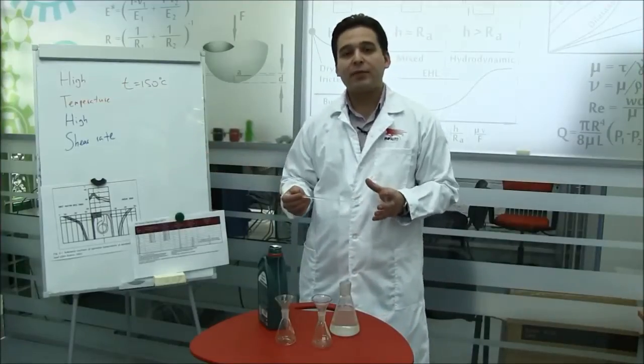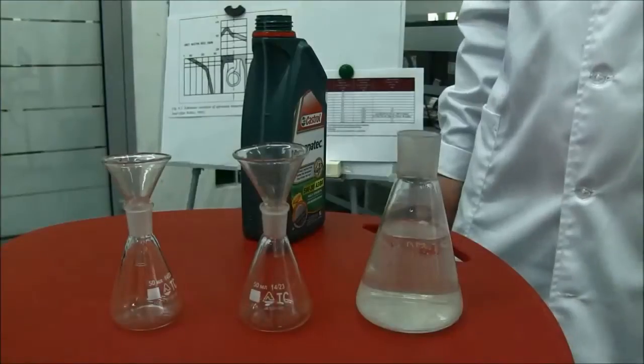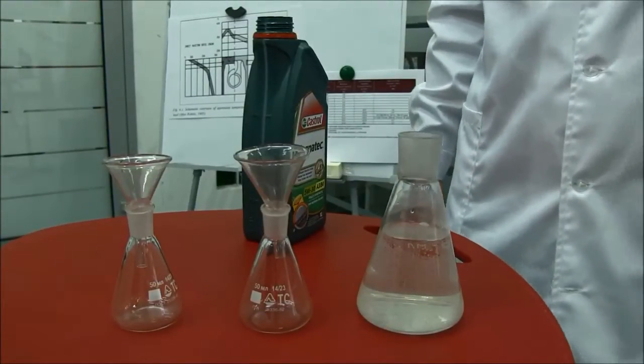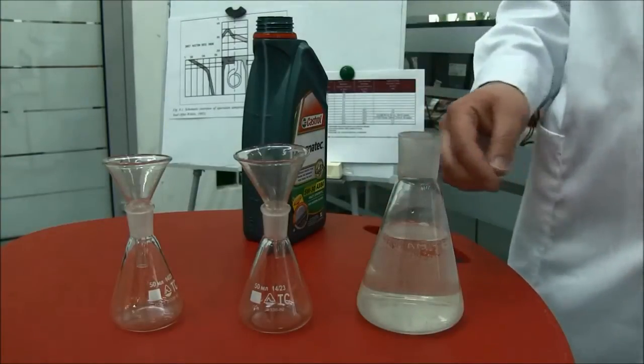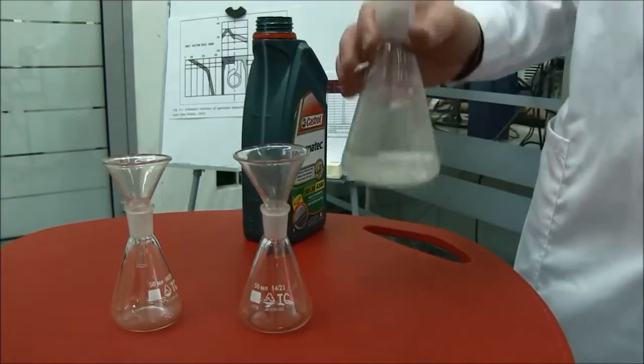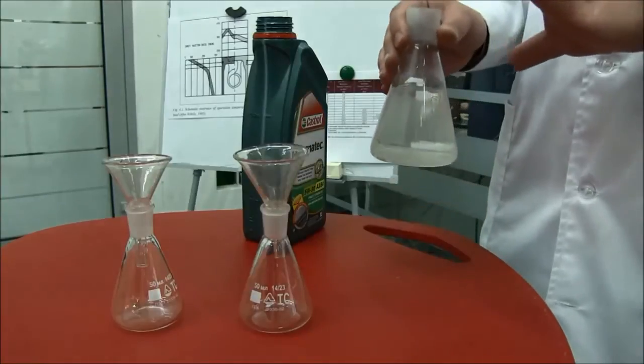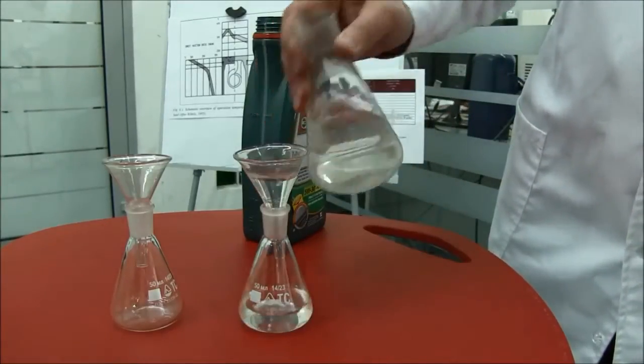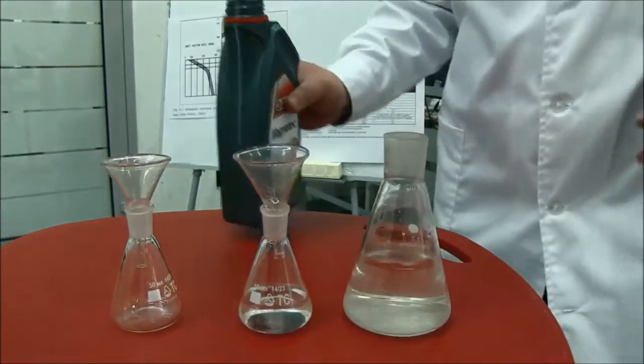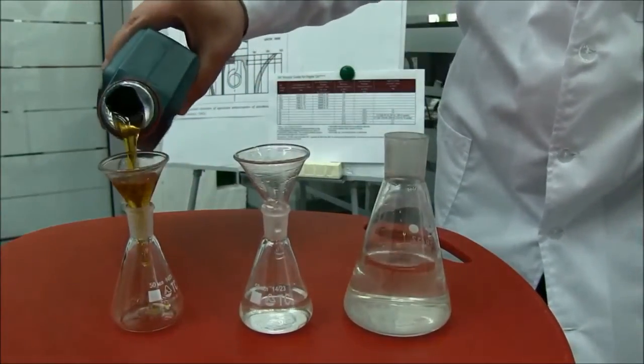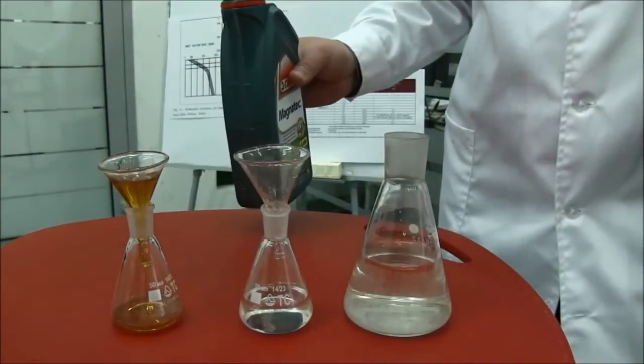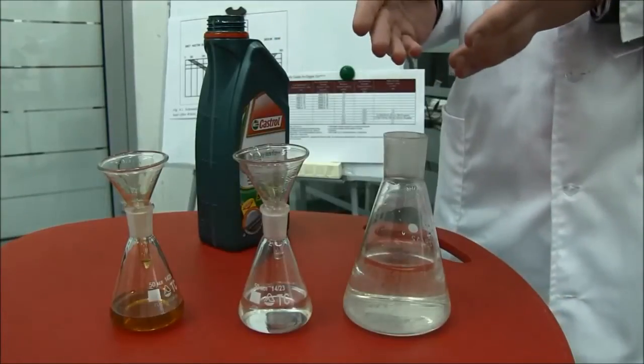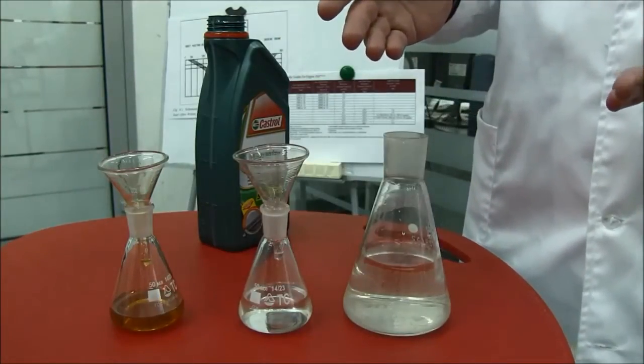On that reason we need to understand what viscosity is. Viscosity is a property of a liquid to resist external input. We will show the simplest example. We take some water and motor oil, and look how fast they are leaking out from the funnel. Only one or two seconds for water, and about five seconds for oil. This is the easiest way to show how liquids can differ from each other.